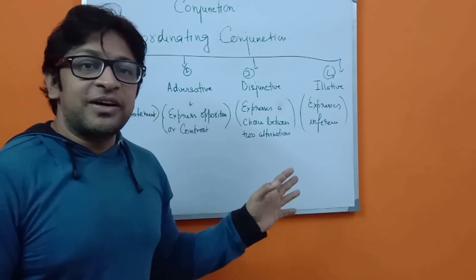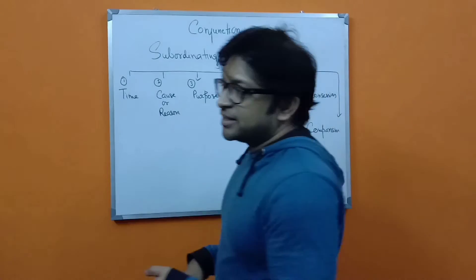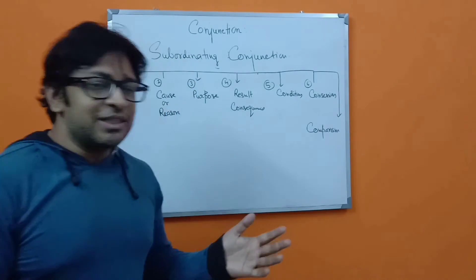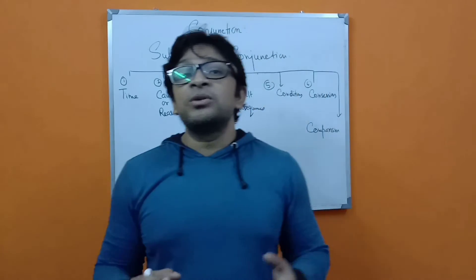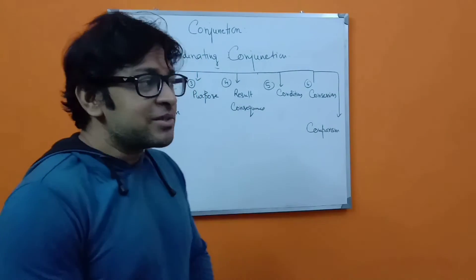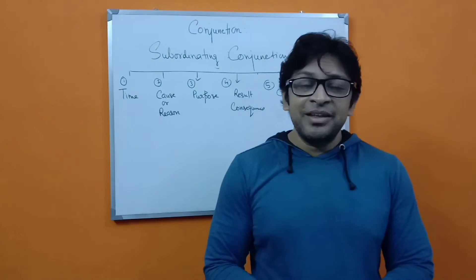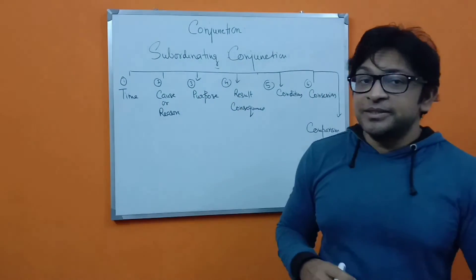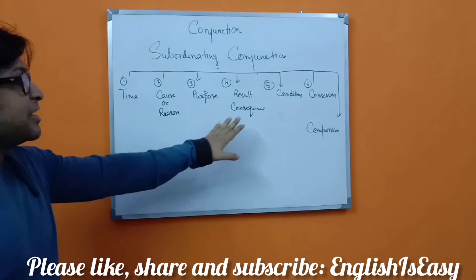Learn these four types by heart and you will have no problem with coordinating conjunctions. Subordinating conjunctions work differently — in subordinating conjunctions, there is one independent sentence that expresses a complete meaning, and it is joined with one or more dependent sentences that do not express complete meaning on their own. Subordinating conjunctions can be classified into: time, cause or reason, purpose, results or consequence, conditions, and concessions.